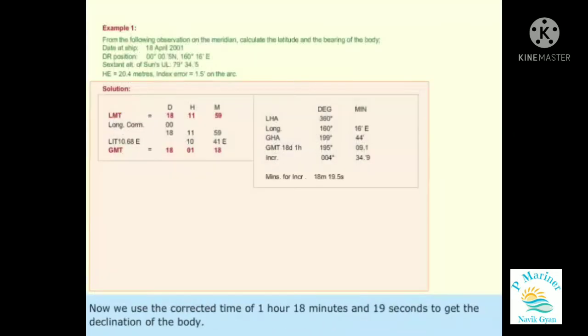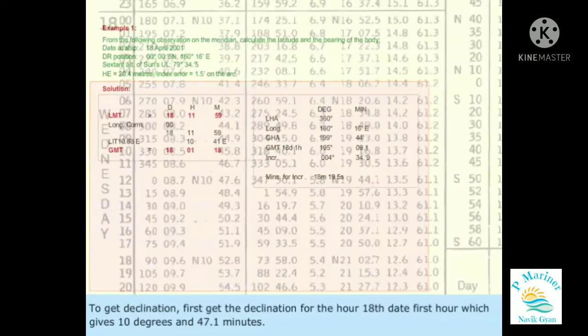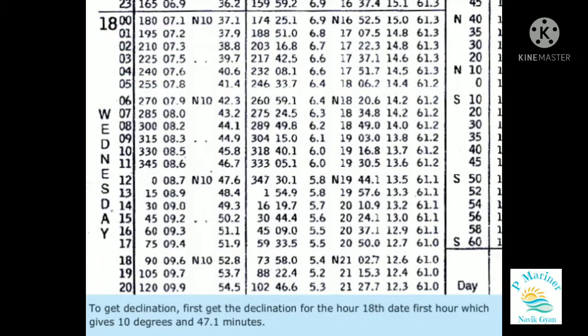Now we use the corrected time of 1 hour 18 minutes and 19 seconds to get the declination of the body. To get declination, first get the declination for the hour 18th date, first hour, which gives 10 degrees and 47.1 minutes.